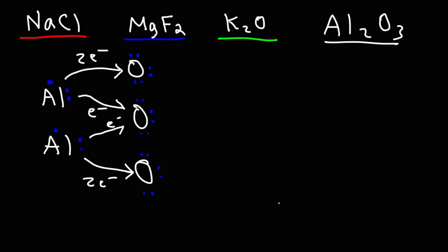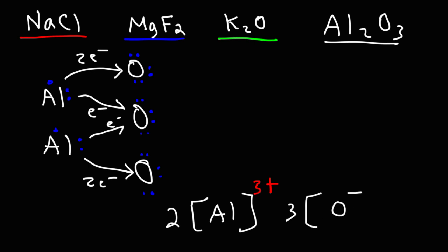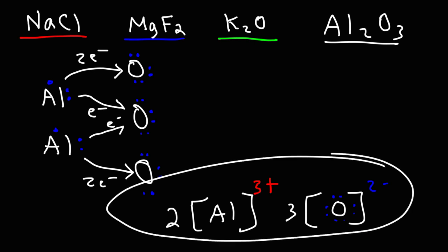We're going to have two aluminum Al³⁺ cations — because we have two of them and each gave away three electrons, so as ions they will have a three-plus charge. We have three oxide ions each with a minus-two charge, and they all have four lone pairs. So that's the Lewis structure for aluminum oxide.